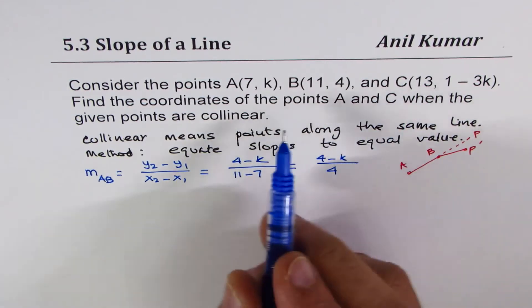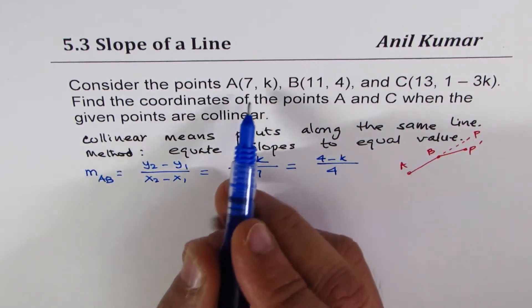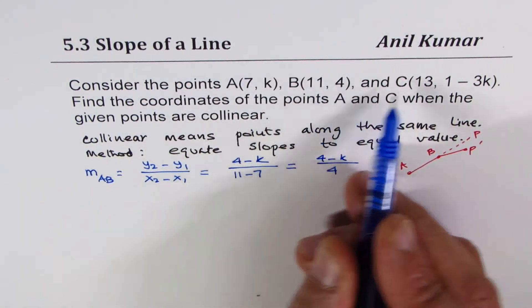Now, let's find the slope between B and C. Not between A and C, but B and C. So slope between B and C.